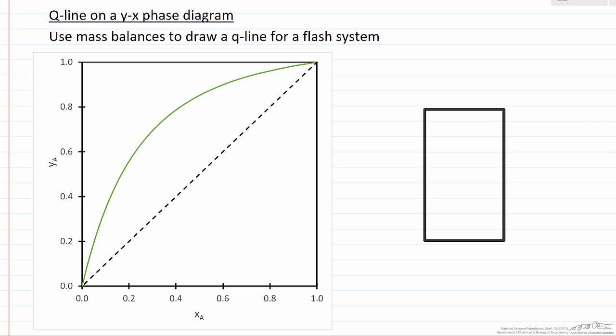In this screencast, we're going to look at how to draw a Q-line on a Y-X phase diagram, because this is useful in helping to visualize the behavior in separations, and this line basically corresponds to a mass balance.